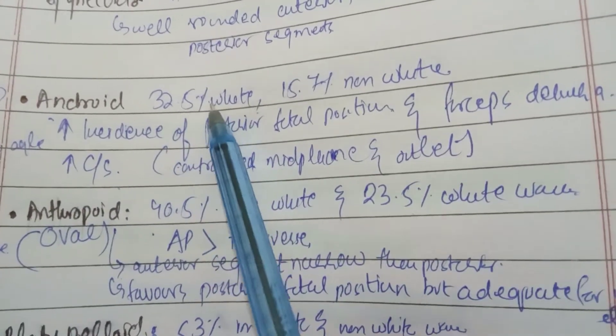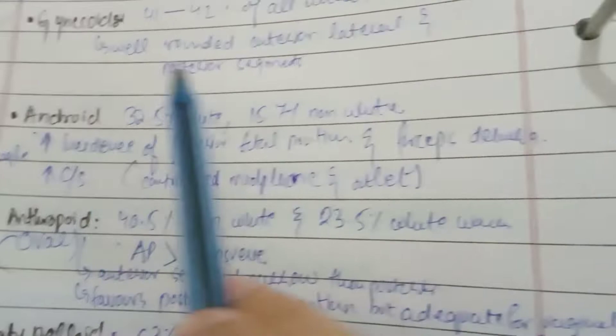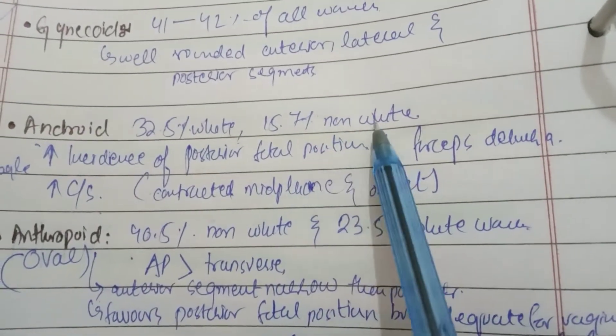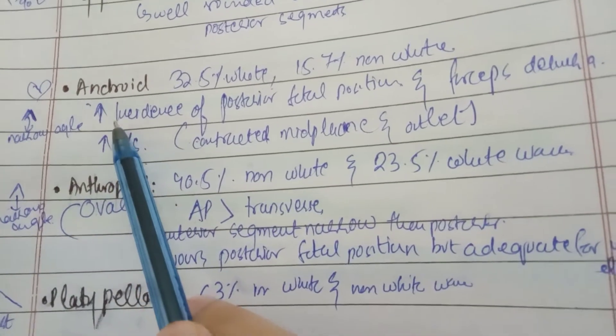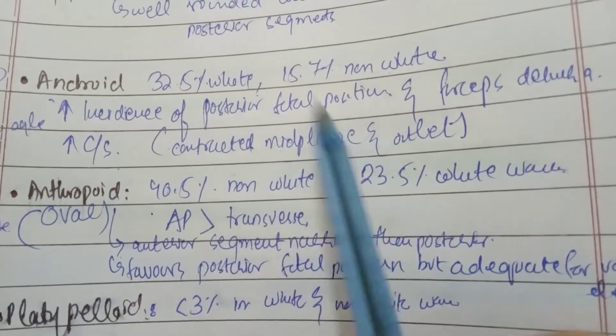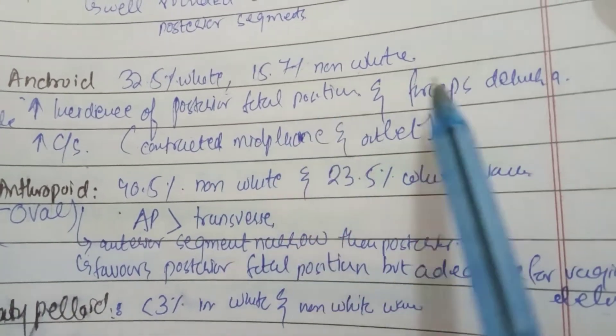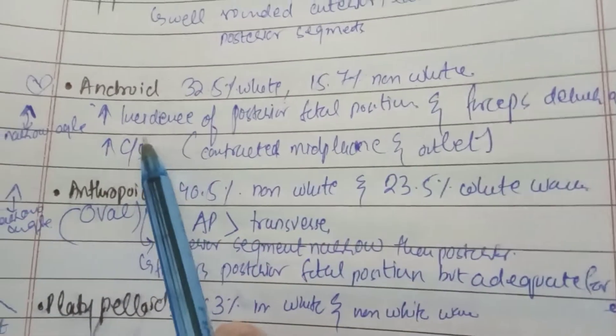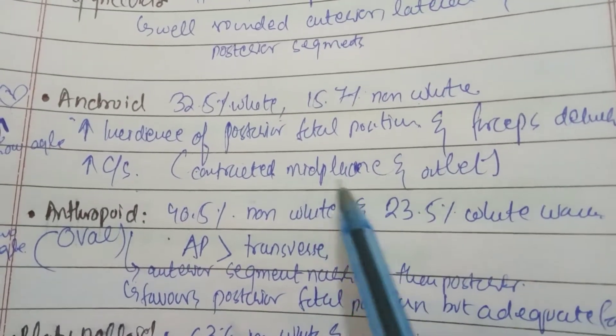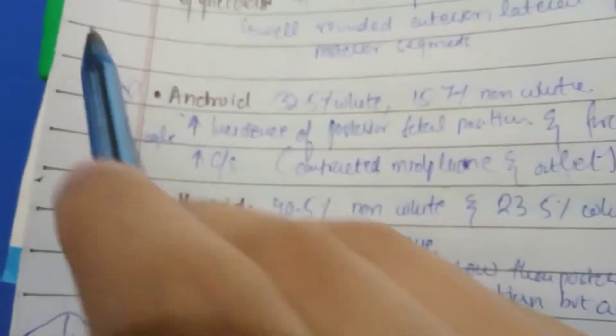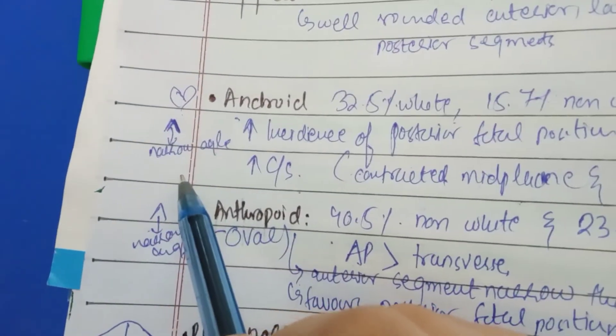Android is present in 32.5% of white females, second most common in white females. And 15.7% in non-white, third most common in non-white females. It increases the incidence of posterior fetal position, forceps delivery, and increases the incidence of C-sections as well. There is contracted pelvis - inlet, outlet, and contracted mid-plane. Heart shaped pelvis with narrow sub-pubic angle.